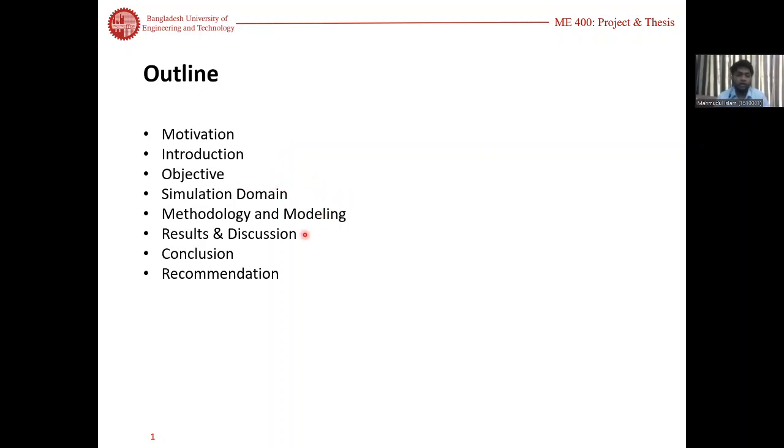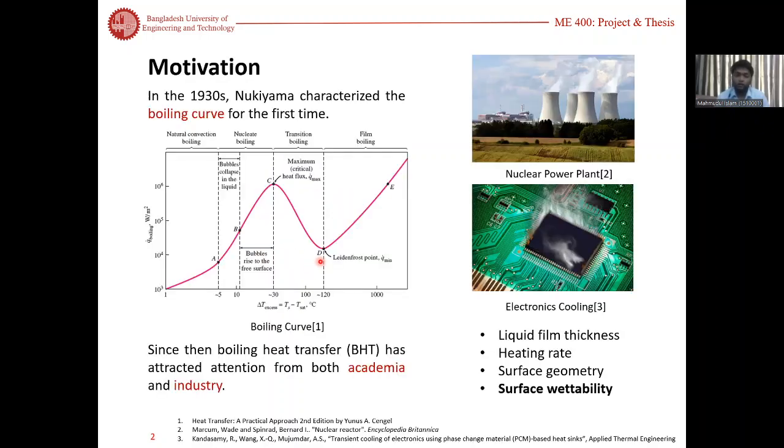After the characterization of boiling curve in 1930, phase change heat transfer has garnered much attention from both academics and industrialists. There are a number of potential applications in nuclear power plants and electronic cooling. Phase change heat transfer depends on liquid film thickness, heating rate, surface geometry, and most importantly surface wettability.